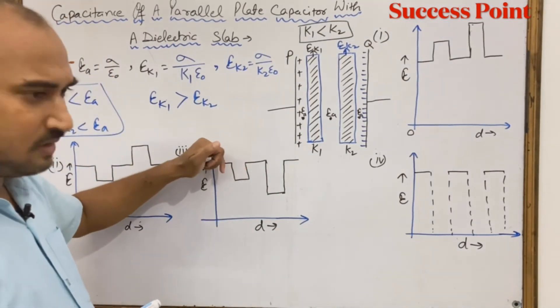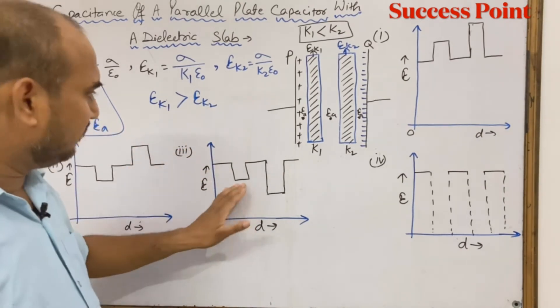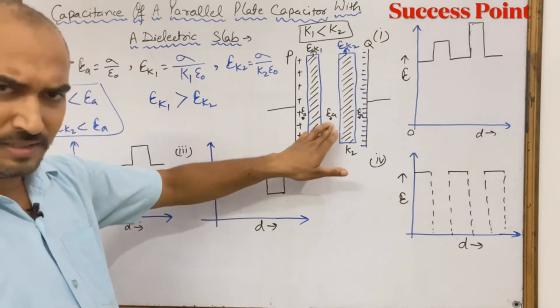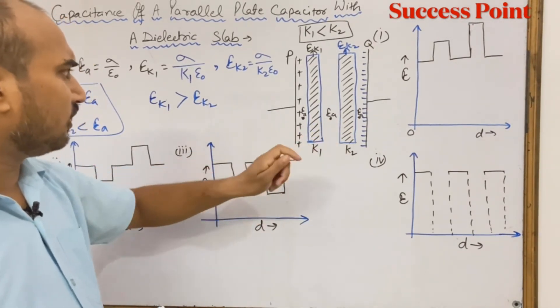Here, Ea, then EK1 which is smaller than Ea, right? Then what about EK2?